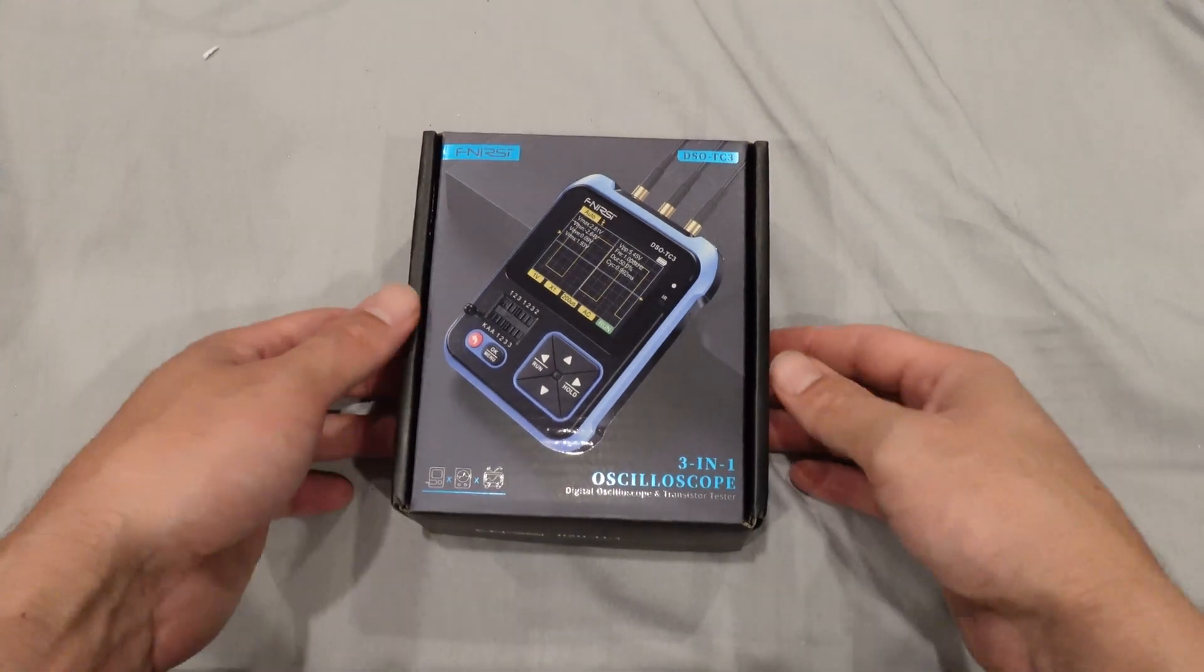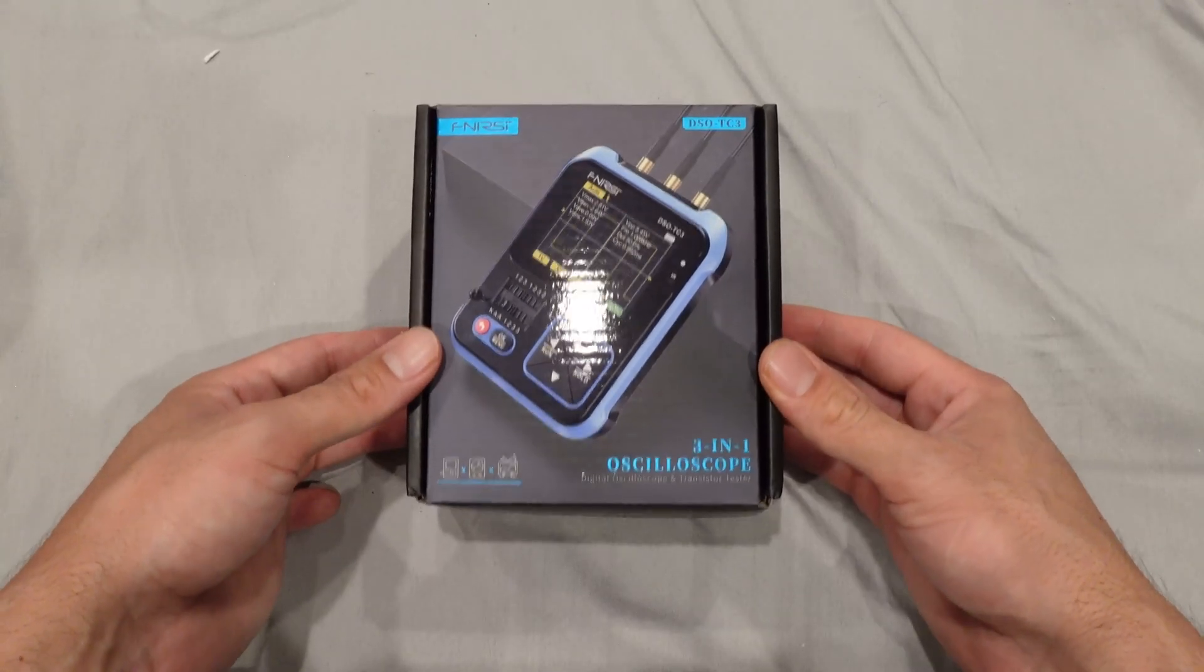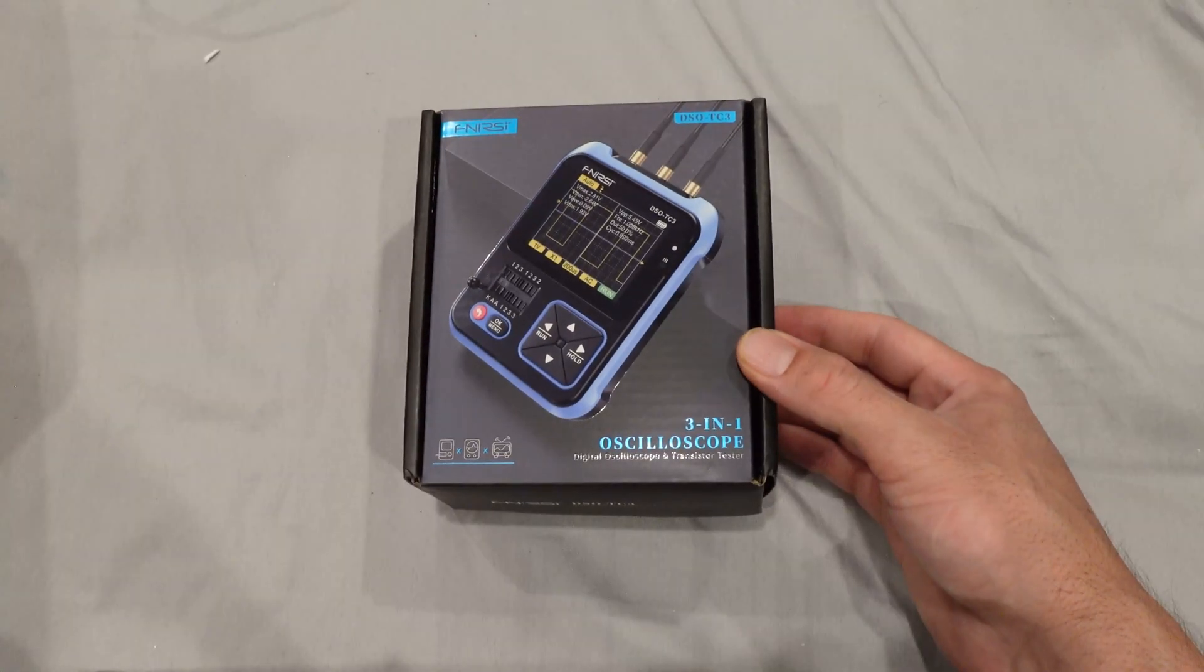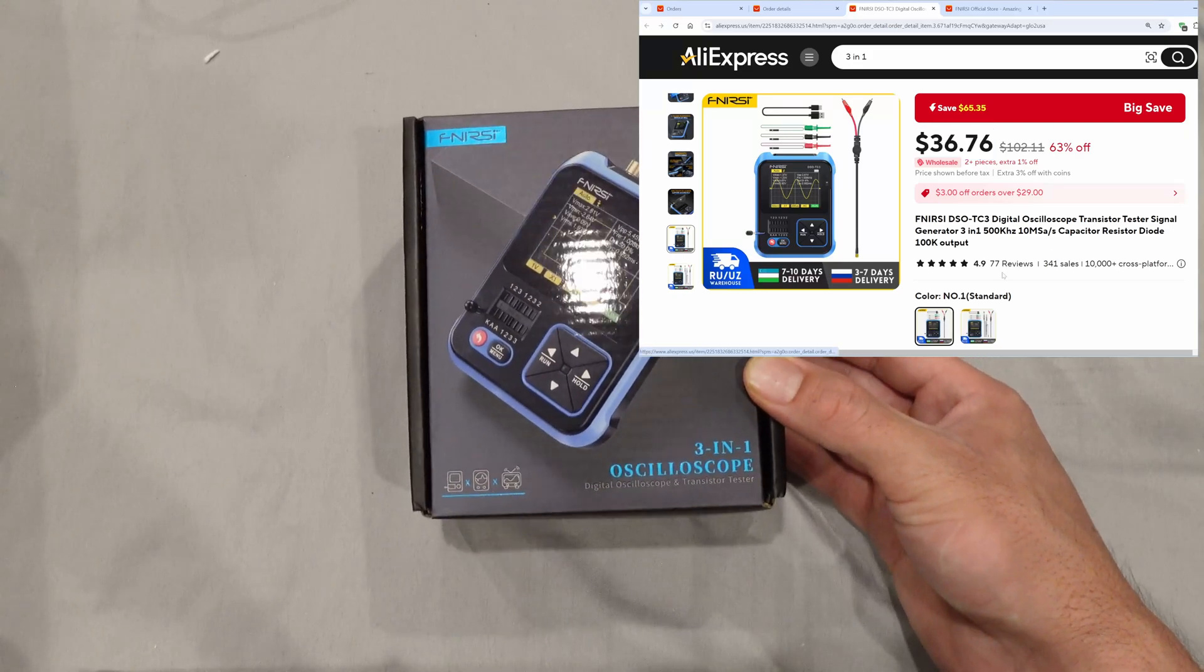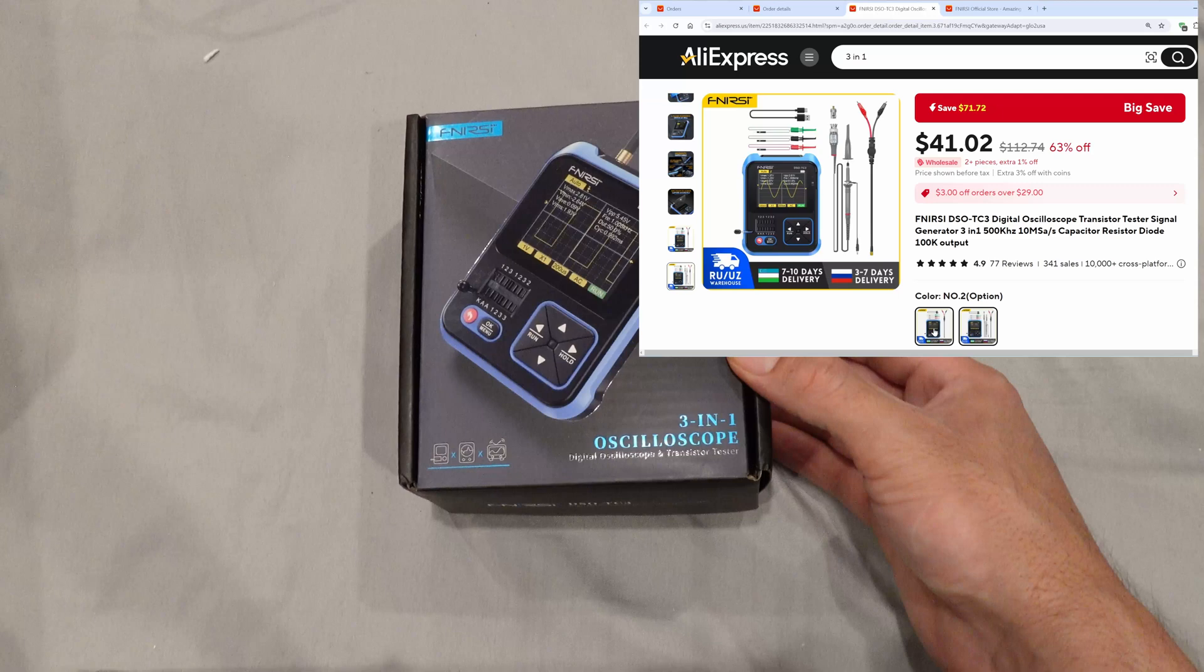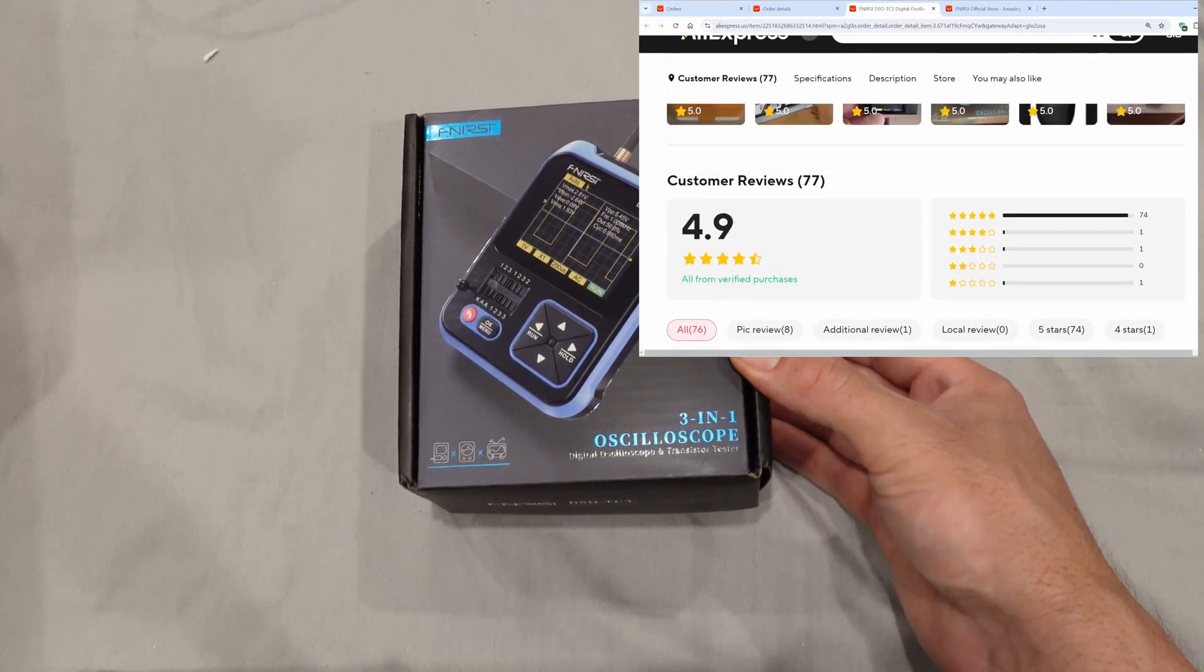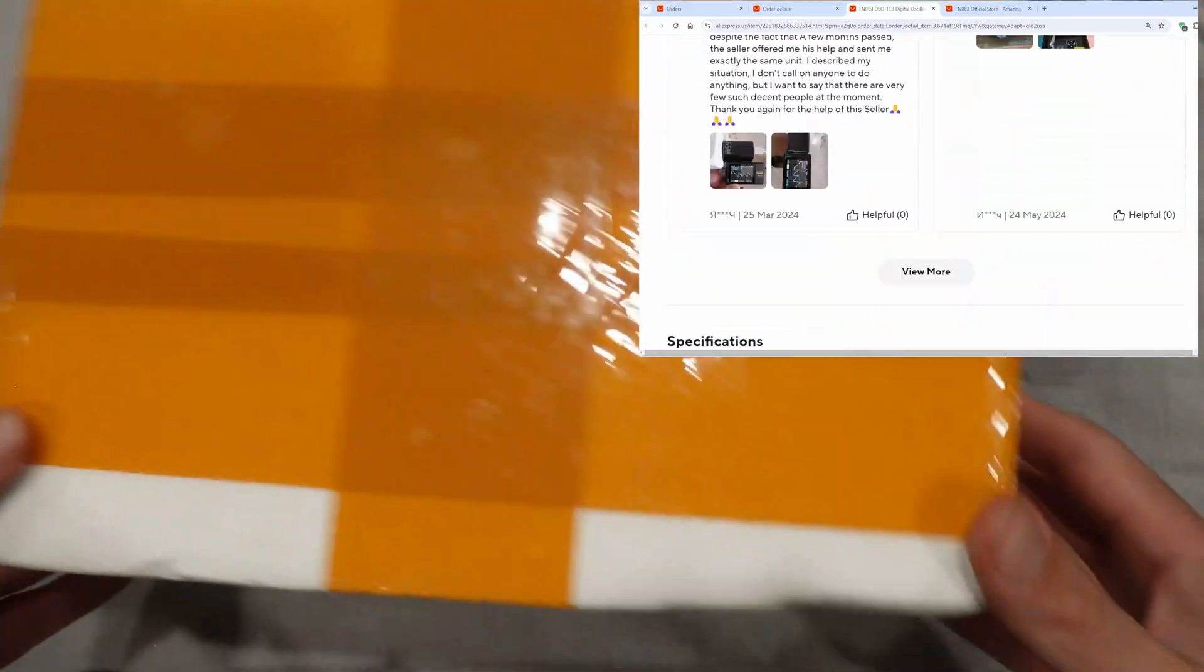Hello everyone, welcome back. Today in this video I'm going to review this Fenerci 3-in-1 oscilloscope, signal generator, and component tester. I was looking for a portable signal generator and I saw this 3-in-1 which also has an oscilloscope, and considering its price, which was around $40 on AliExpress, it was a good deal so I ordered it.